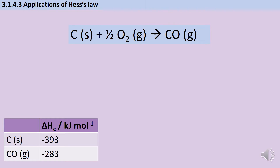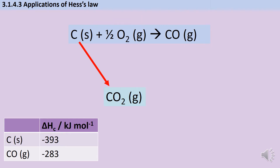Imagine I wanted to work out experimentally what the standard enthalpy of formation for carbon monoxide is. This is basically impossible to do in the lab, because there's no way to make sure that all of the carbon is incompletely oxidised — I'm going to end up with some carbon atoms being fully oxidised to make carbon dioxide, or some left behind not oxidised at all. But what I can do instead is use a Hess's cycle to predict what the size of this standard enthalpy of formation will be, by taking carbon and fully combusting it to carbon dioxide, and also taking carbon monoxide and fully oxidising that.